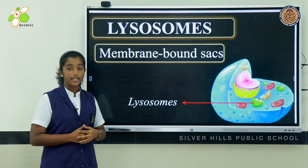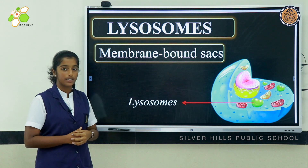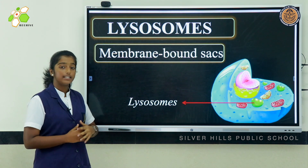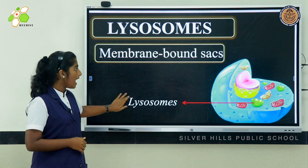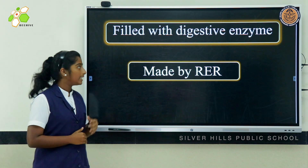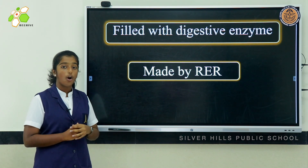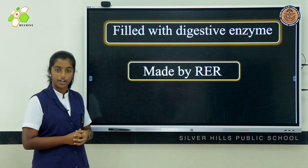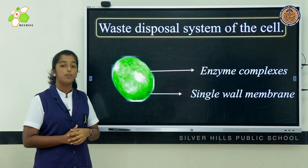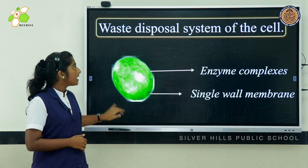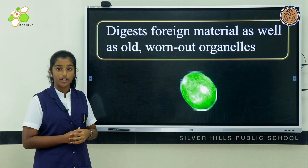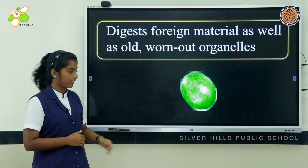The first topic I will be taking today is lysosomes. Lysosomes are membrane-bound sacs — they are covered by a single membrane and these sacs are filled with digestive enzymes. These enzymes are made by the RER, or the rough endoplasmic reticulum. Lysosomes are known as the waste disposal system of the cell — they digest foreign material such as bacteria and food, as well as old, worn-out cell organelles.